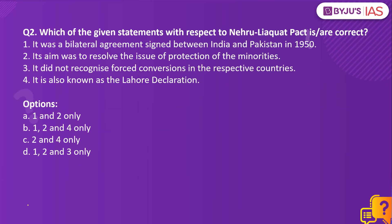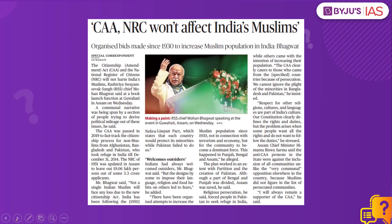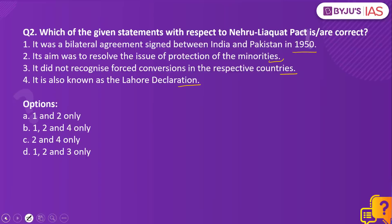Moving on to question number two. Which of the given statements with respect to the Nehru-Liaquat Pact is or are correct? Statement 1: It was a bilateral agreement signed between India and Pakistan in 1950. Statement 2: Its aim was to resolve the issue of protection of minorities. Statement 3: It did not recognize forced conversions in the respective countries. Statement 4: It is also known as the Lahore Declaration. An article in The Hindu newspaper makes mention of the Nehru-Liaquat Pact signed in 1950 following massive communal riots after partition.